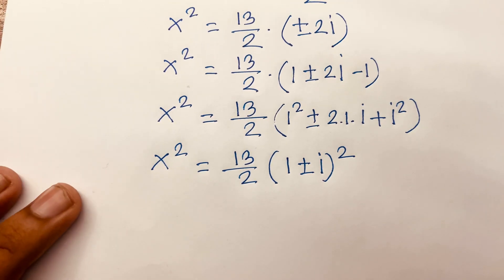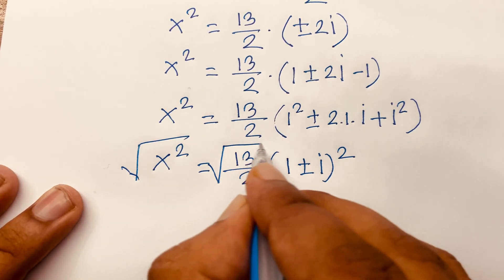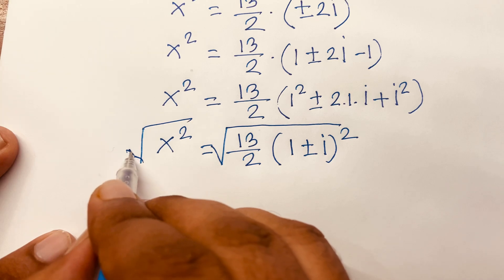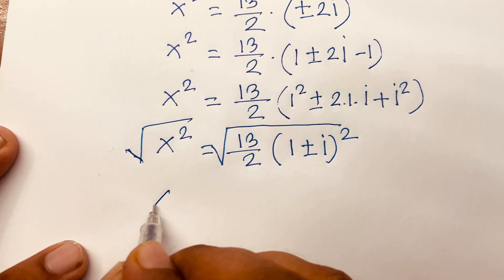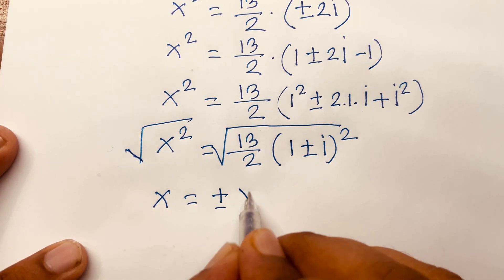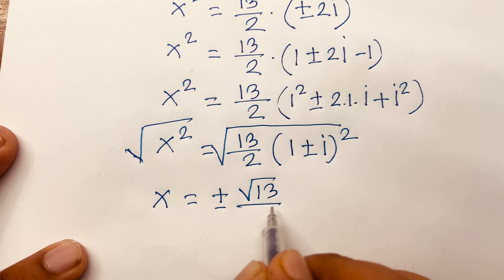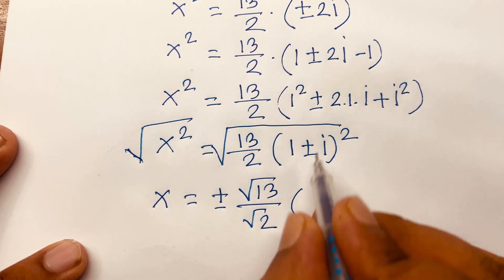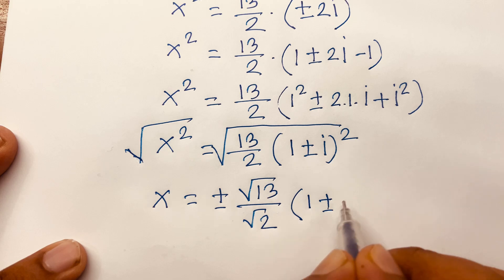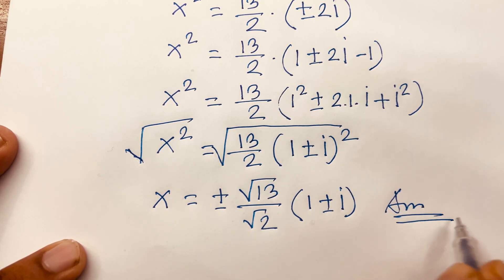Then I use the square root on both sides. The square cancels, so x is equal to plus or minus square root of 13 over square root of 2, times 1 plus or minus i. This is our final answer.